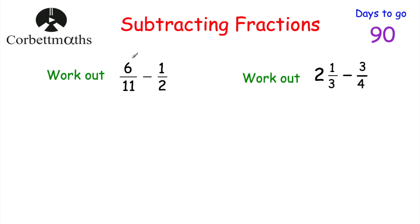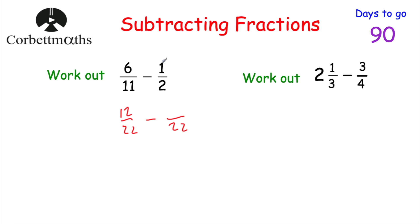Now let's have a look at subtracting fractions. We've got: work out six elevenths subtract a half. The first step is the same — get equivalent fractions with the same denominator — and instead of adding the numerators, you just take away the numerators. For six elevenths subtract a half, I need a common denominator for 11 and 2, so I'm thinking 22. To get from 11 to 22 we double it, so double the numerator: that's 12. To get from 2 to 22 we multiply by 11, so one times 11 is 11. We've got 12 twenty-seconds subtract 11 twenty-seconds, which is one twenty-second. So six elevenths subtract a half equals one over twenty-two.